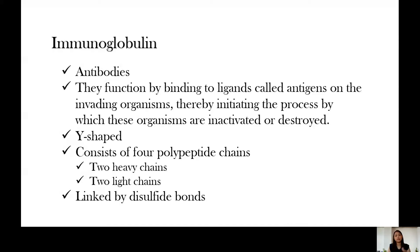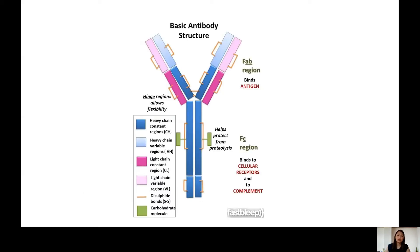Globulins, also called antibodies, bind to ligands which we call antigens of the invading organisms. Once they bind to these antigens, they initiate the process by which these organisms are either inactivated or destroyed by the killer cells. Antibodies are usually Y-shaped and consist of four polypeptide chains — two heavy chains and two light chains. The name of the immunoglobulin is dependent on the type of heavy chain. They are linked by disulfide bonds.